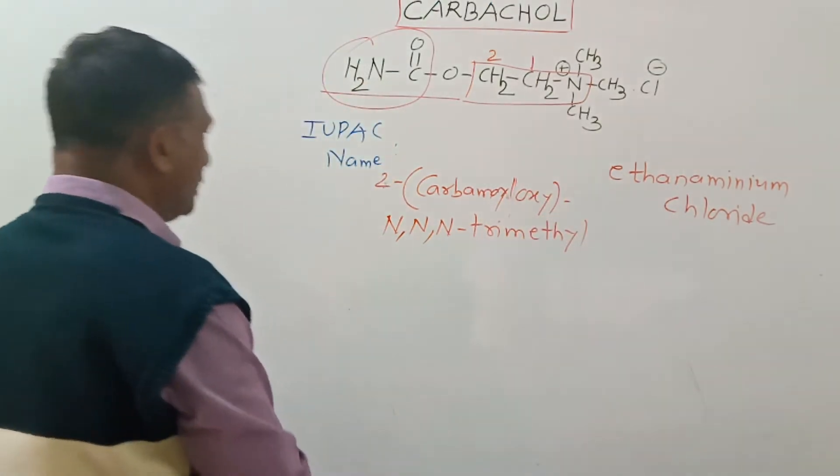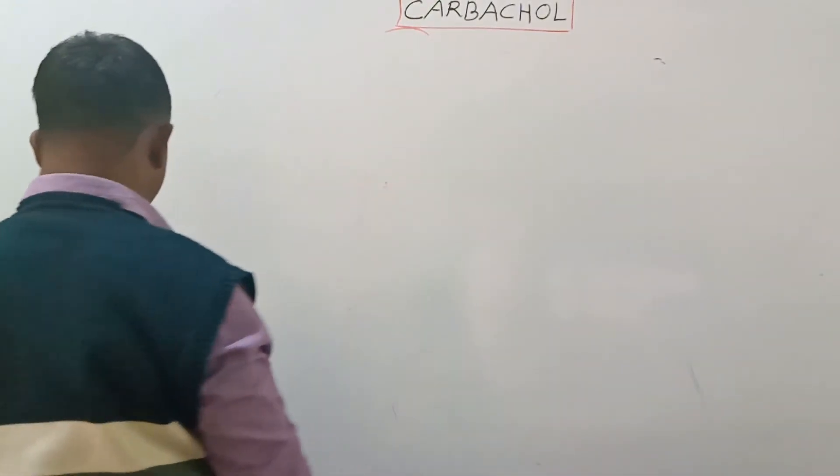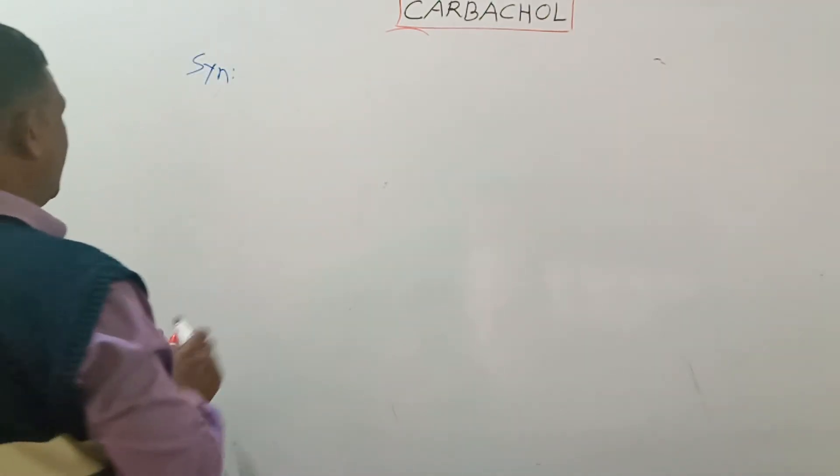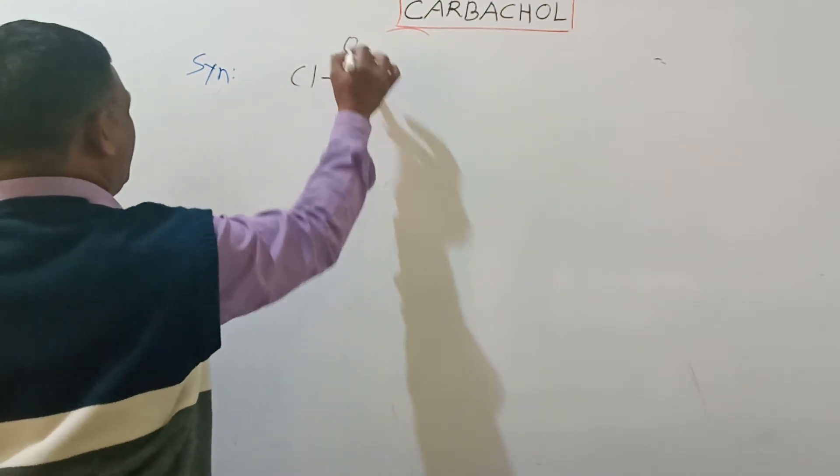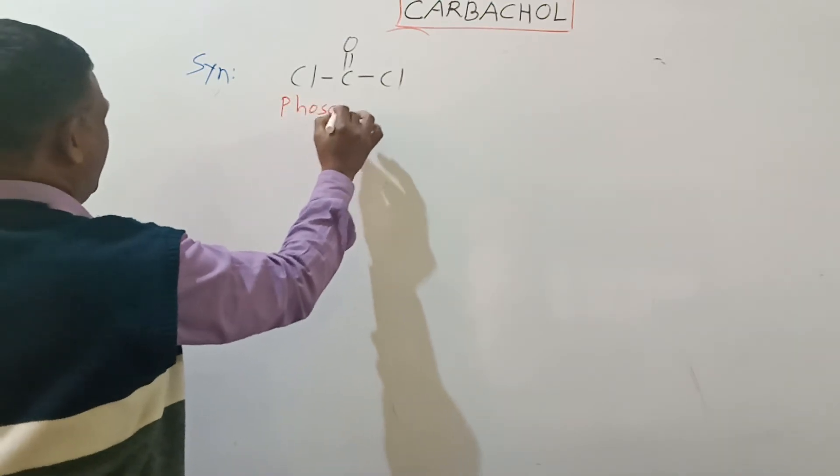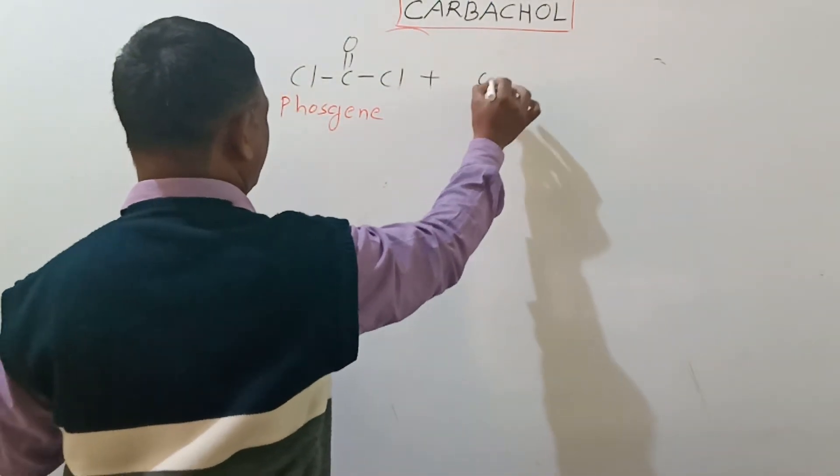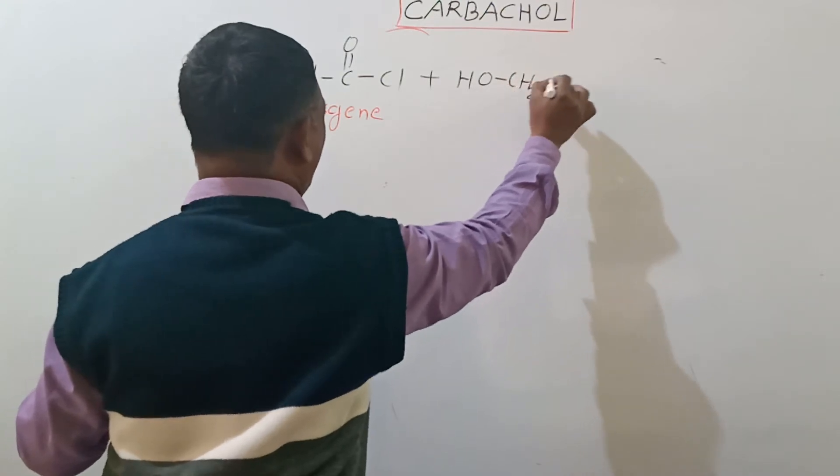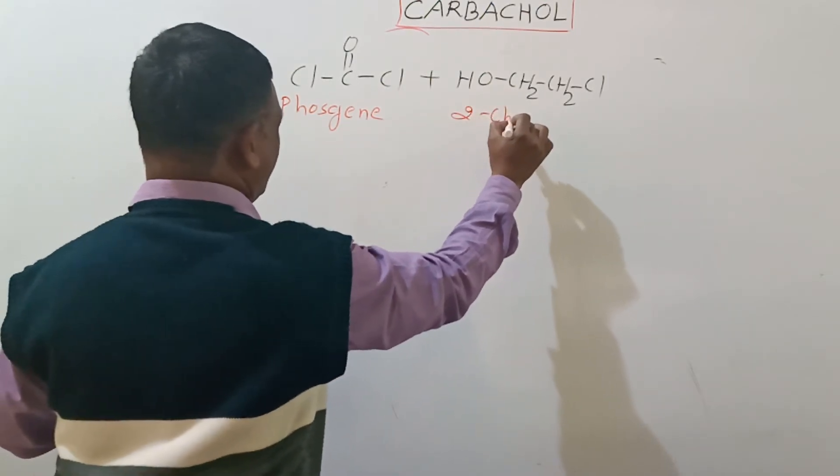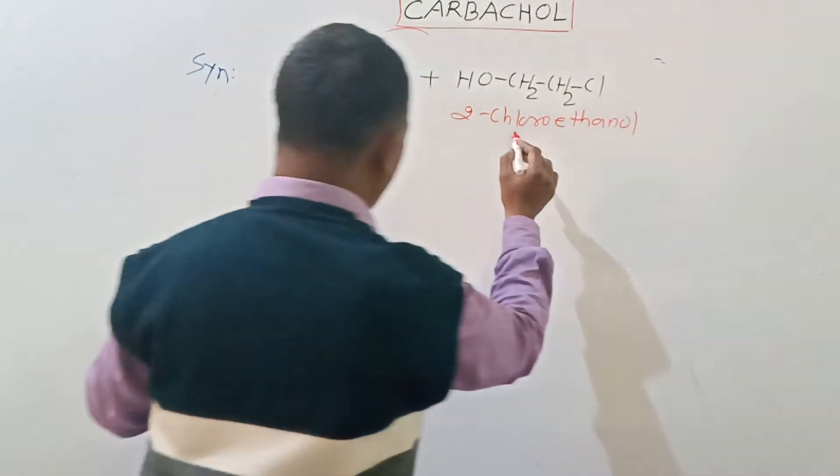Move on to the synthesis of this compound. In synthesis, the starting material is Cl-C(O)-Cl, it is called phosgene, which reacts with 2-chloroethanol, which is also called ethylene chlorohydrin.